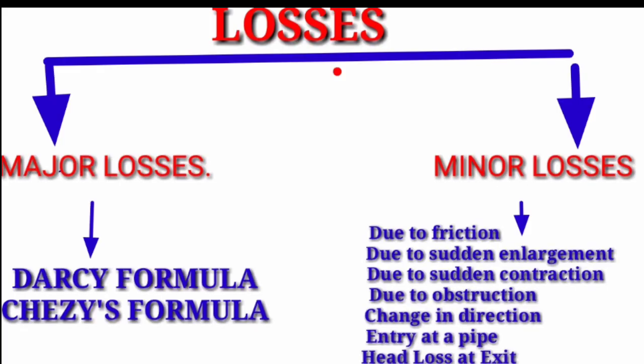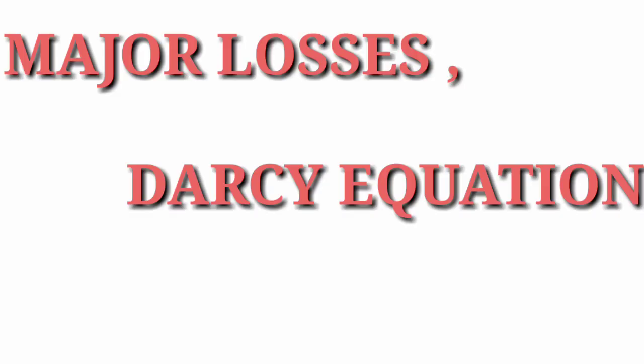For major losses we have two formulas: first is the Darcy equation and second is the Chezy formula. For minor losses we will see: head loss due to friction, head loss due to sudden enlargement, head loss due to sudden contraction, head loss due to obstruction, head loss due to change in direction, and head loss at entry and exit of a pipe from a vessel. In today's video we are going to see one equation from major losses — the Darcy equation.